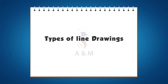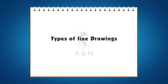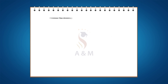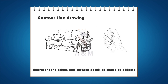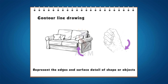Some common types of line drawings are as follows. First, contour line drawings. Contour line drawings are drawings that use a fairly continuous line to represent the edge and surface detail of a shape or object being drawn.